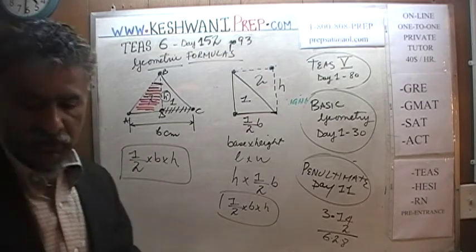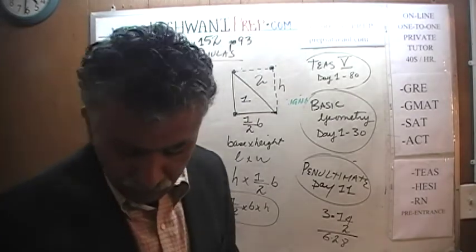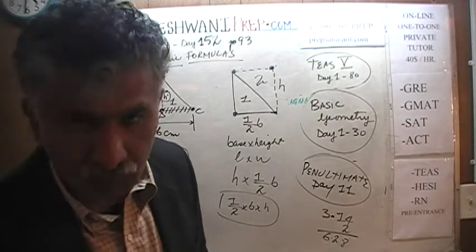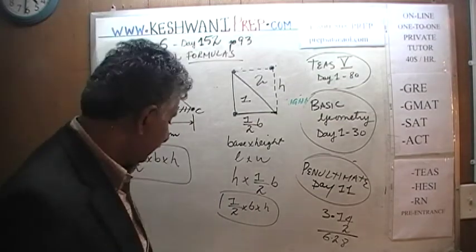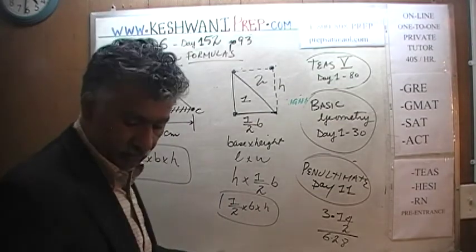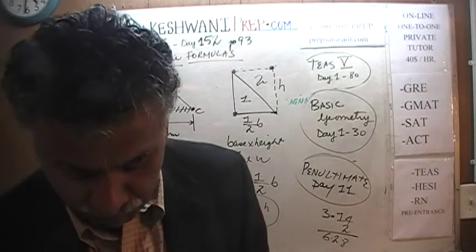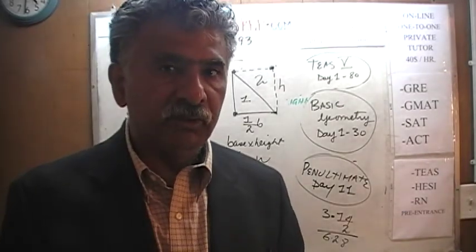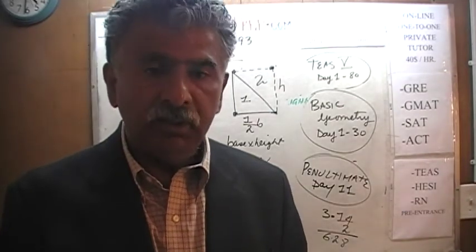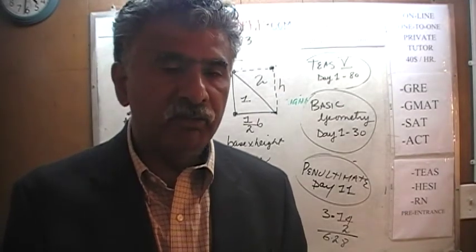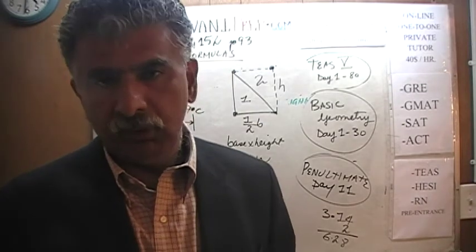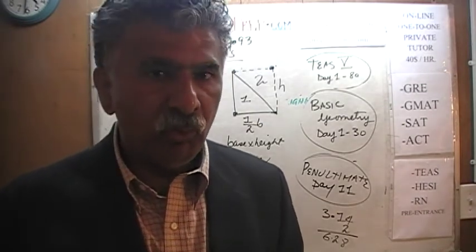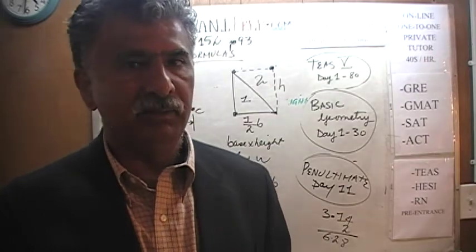Whether the triangle is drawn the way I drew it at the beginning, or drawn the way it appears in the book, it doesn't matter how it is drawn — it is always one half base times height. Now you understand why the formula works the way it does.